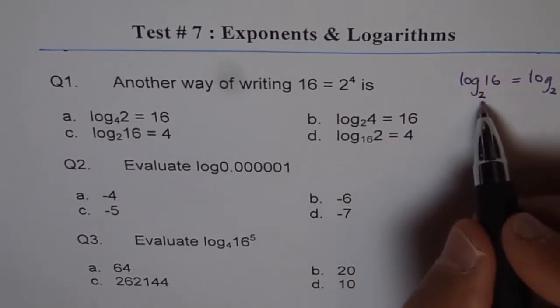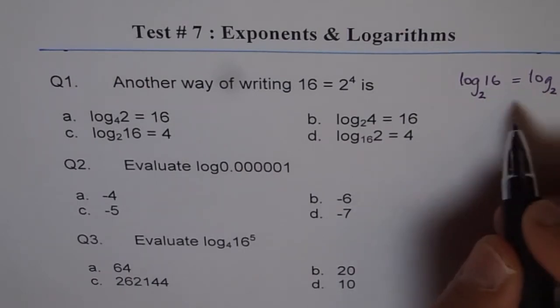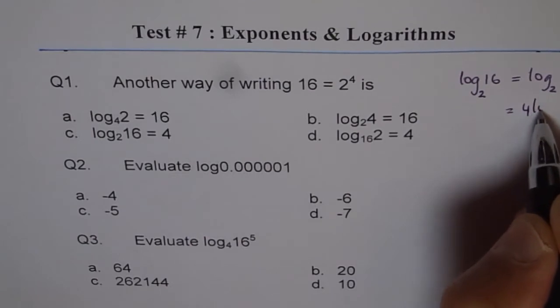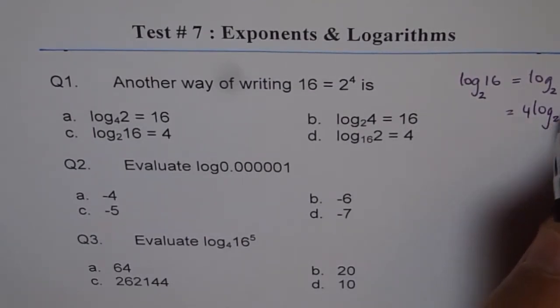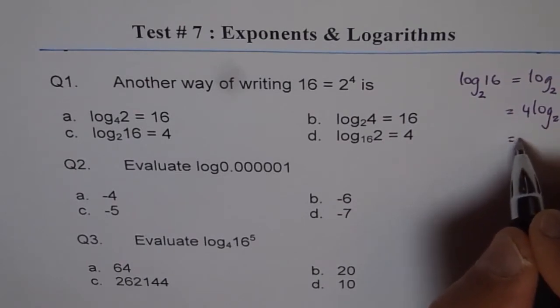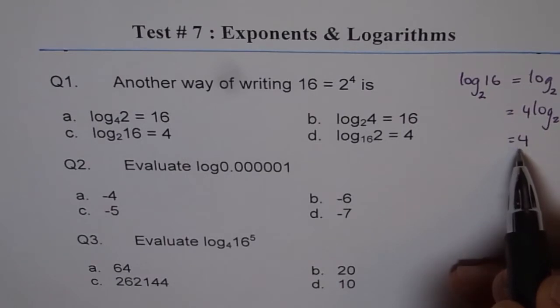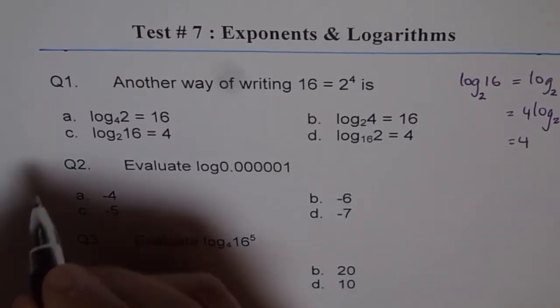So the left side is log to the base 2 of 16. And here, we know from power rule, it is 4 times log to the base 2 of 2. Log to the base 2 of 2 is 1, so we get 4. Therefore, log to the base 2 of 16 equals 4 is the correct answer, which is option C.